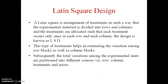Fundamentally, a Latin square is an arrangement of treatments such that experimental material is divided into rows and columns, and the treatments are allocated such that each treatment occurs only once in each row and each column. This design is known as Latin square design or LSD. This type of design helps in estimating the variation among row blocks as well as column blocks. The total variations among experimental units are partitioned into different sources: namely rows, columns, treatments, and error.